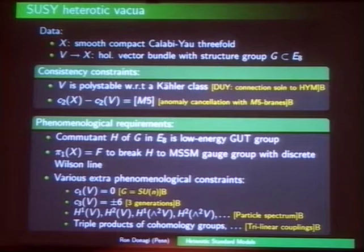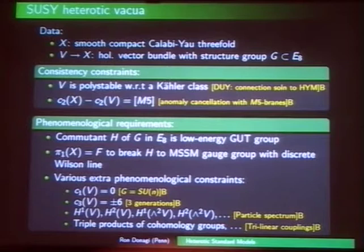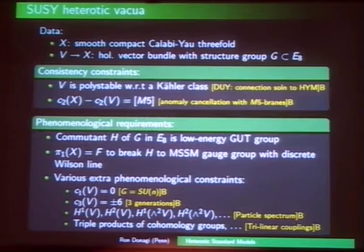There are various extra phenomenological constraints. You want the first Chern class to vanish. The third Chern class expresses the number of generations, so you want that to be plus or minus 6. But that is only three generations at a topological level. We want something much finer: exactly the right spectrum of the MSSM, which means precise specifications of H1 of the bundle, H2 of the bundle, and H1 of various associated bundles like the exterior powers. Going further, you'd like conditions on Yukawa couplings, mu terms — they involve triple products of cohomology groups.